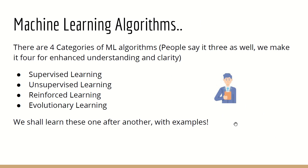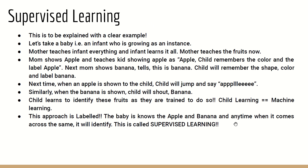Now we need to understand the categories of ML algorithms. There are four types of approaches commonly followed in machine learning: supervised learning, unsupervised learning, reinforced learning, and evolutionary learning. This is a very important interview question — wherever you go, if you say you have studied machine learning, this will be the first question asked.